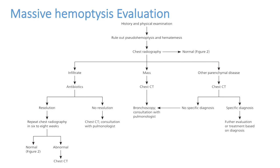For massive hemoptysis, proceed to CT at the earliest. Chest X-ray is the preliminary investigation. If pneumonia is diagnosed, start antibiotics and repeat chest X-ray; otherwise go directly to CT scan to find the source. Bronchoscopy should also be done to evaluate the cause of bleeding, especially in bronchial malignancy. Chest CT is one of the most important tools in the evaluation of hemoptysis.